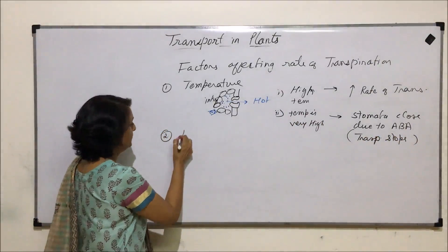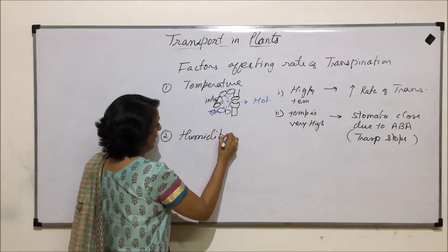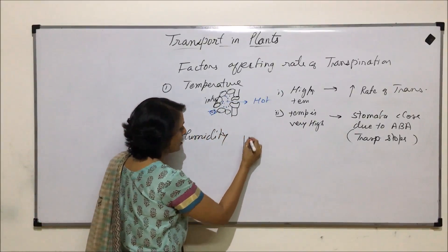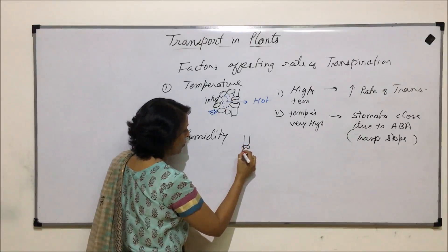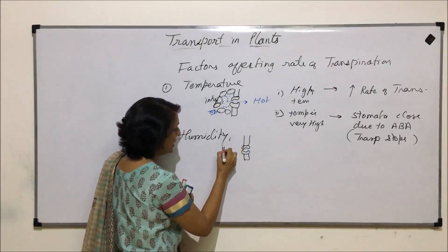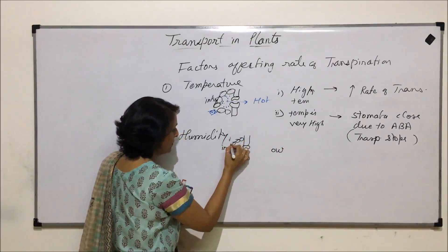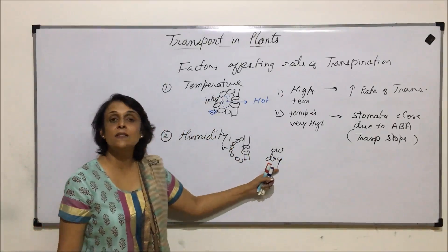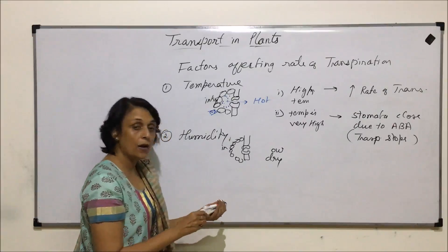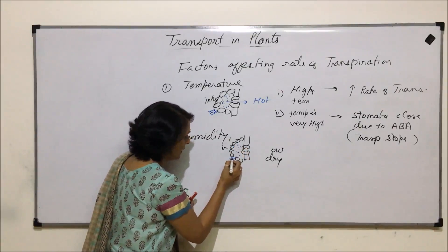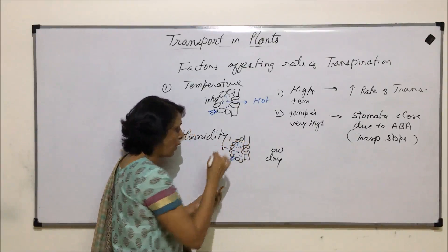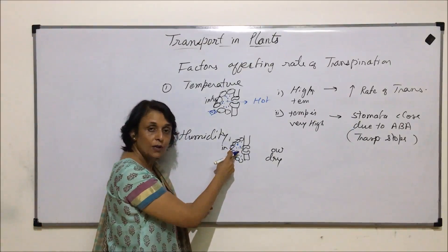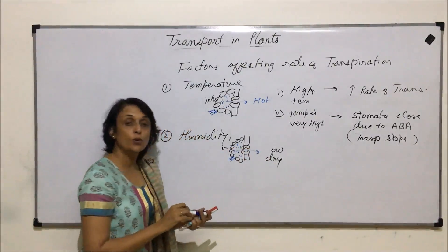The second factor is humidity — the water content present in the air. Consider the same stomatal opening: this is the epidermis, the inner side, and the outer side, with parenchyma cells inside. When humidity outside is less, the outer environment is dry. The space around the stomatal aperture is filled with water vapor, and water vapor moves from a region of higher concentration to lower, so it moves out.